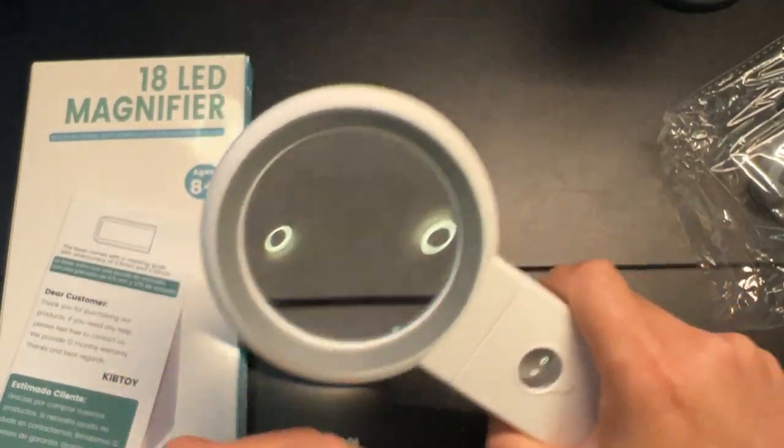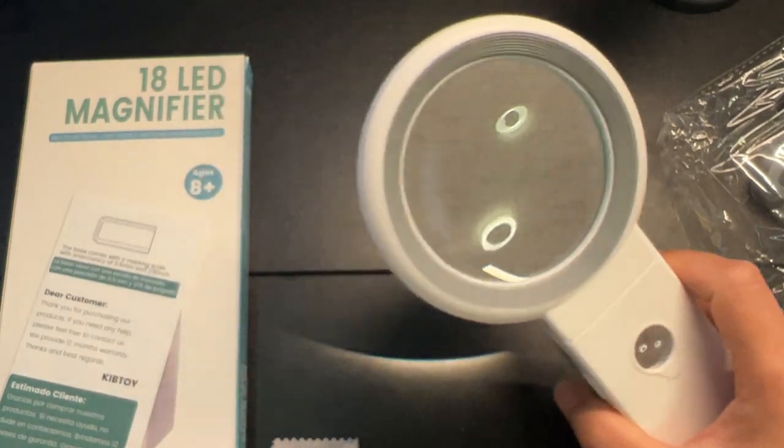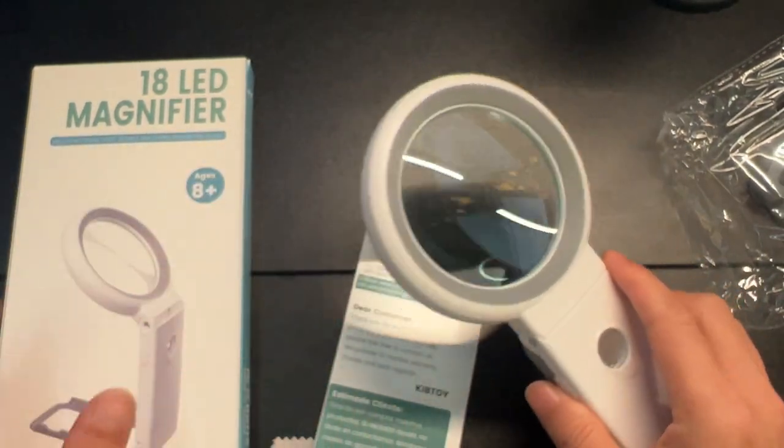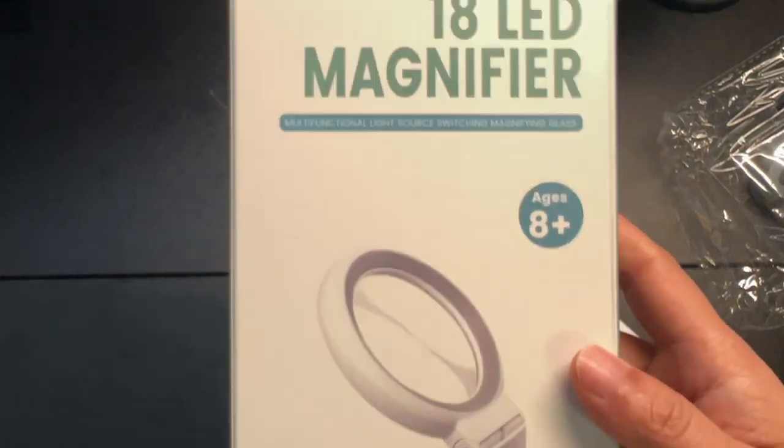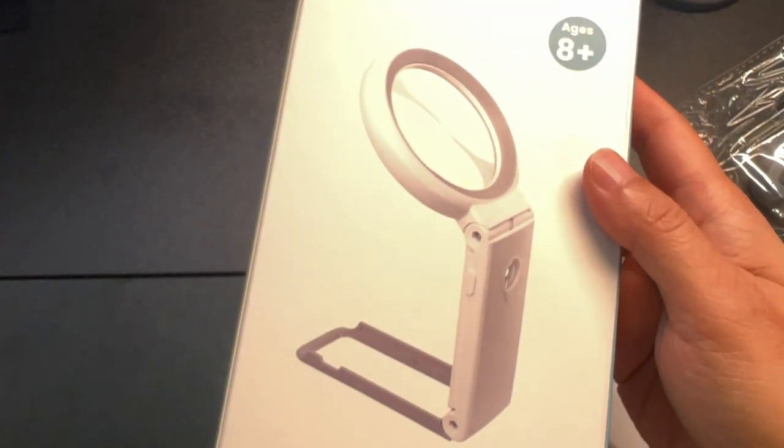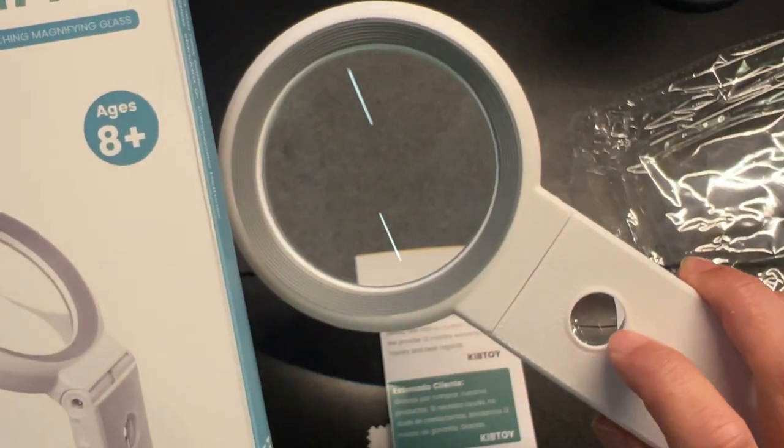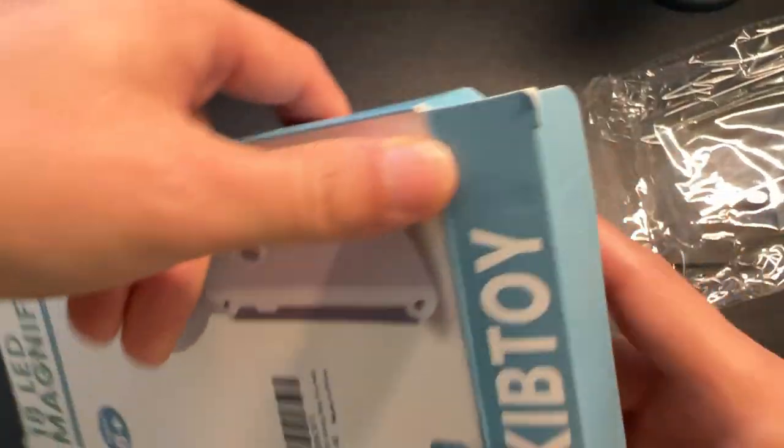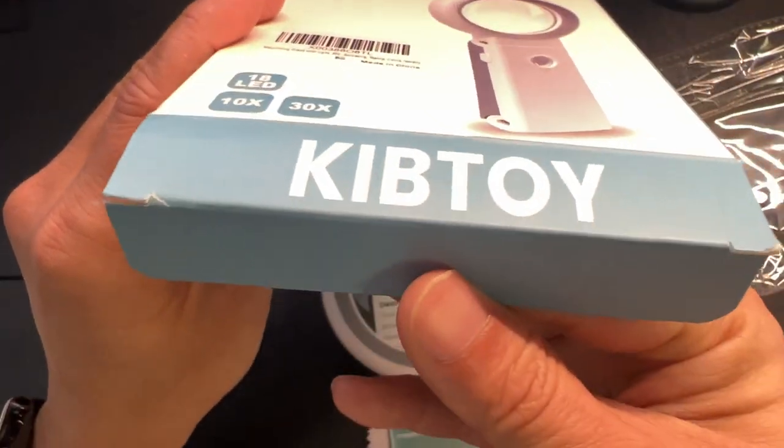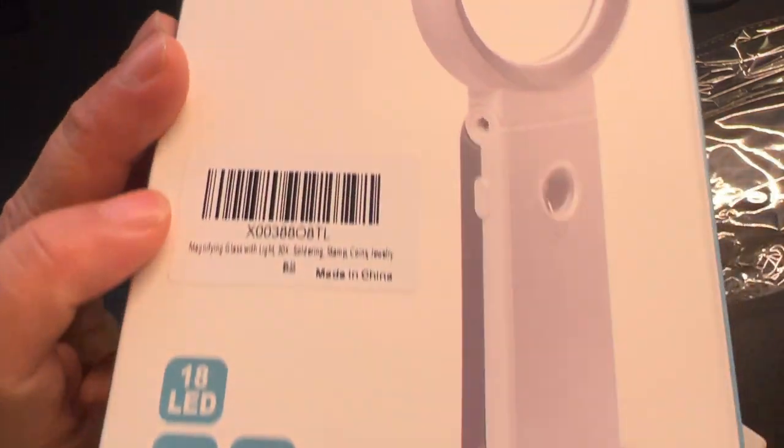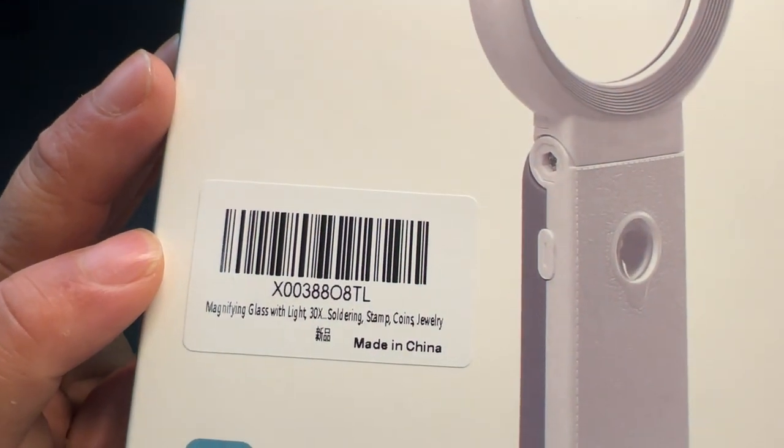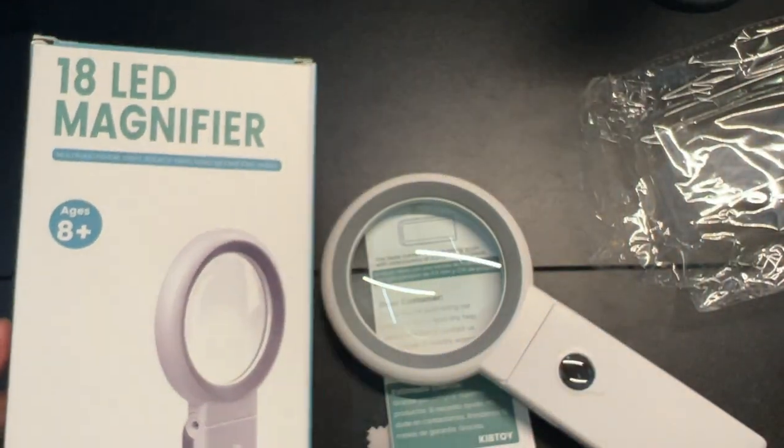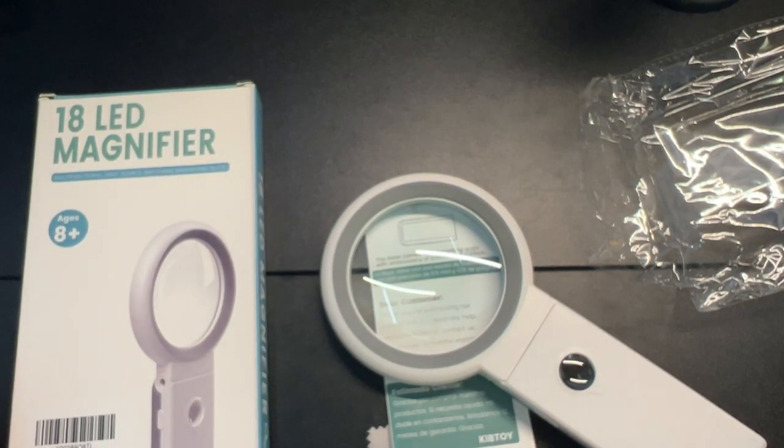From there you can hold it in your hand and use it as normal. Again, this is the 18 LED magnifier. It does 10x and 30x. Using the small window, it's 30x. The brand is Kib Toy. There's the barcode. Alright, see you on the next one.